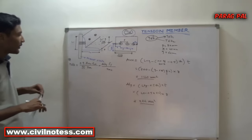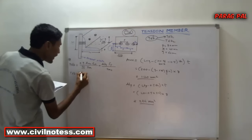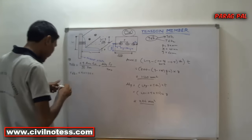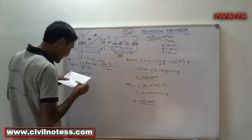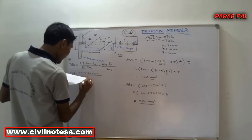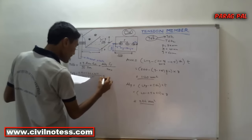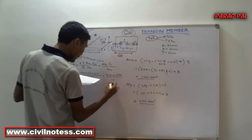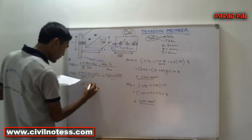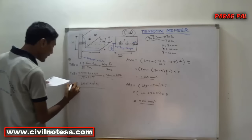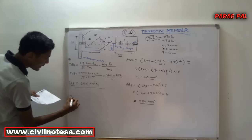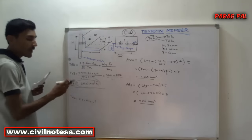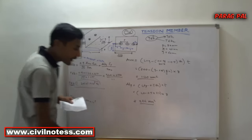Placing all values into the Tdb2 formula: Tdb2 = [0.9 × 1120 × 410 / (√3 × 1.25)] + [320 × 250 / 1.1]. This gives Tdb2 = 263.61 × 10³ N. So from the two Tdb values — Tdb1 = 276.67 × 10³ N and Tdb2 = 263.61 × 10³ N — we take the lesser value: Tdb = 263.61 × 10³ N.